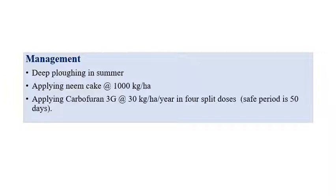Coming to management aspects, deep plowing in summer and application of neem cake at the rate of 1000 kg per hectare can be recommended. Along with application of Carbofuran 3G granules at the rate of 30 kg per hectare per year, split into 4 doses.